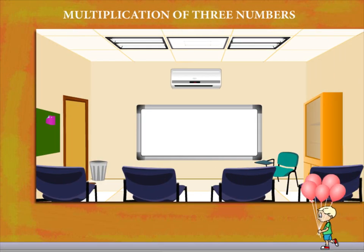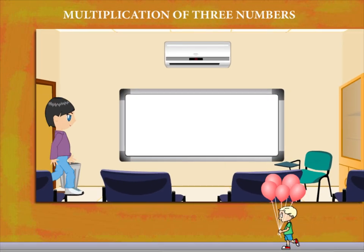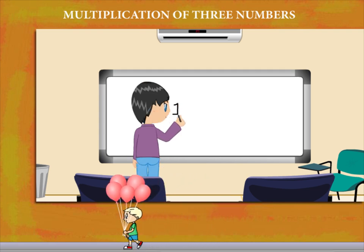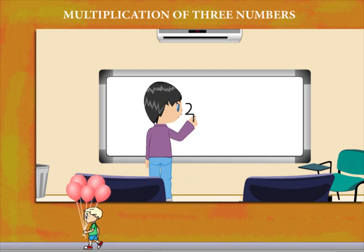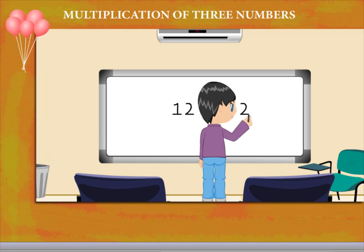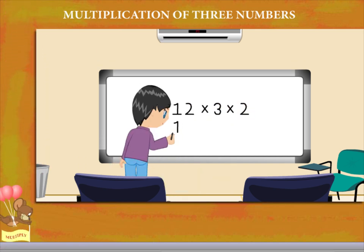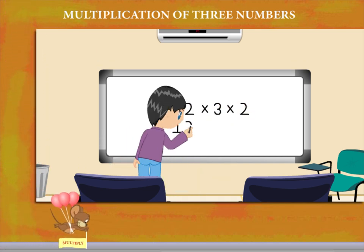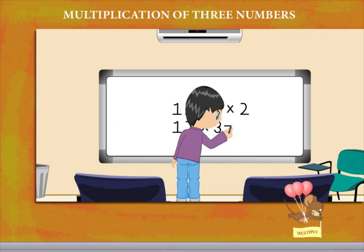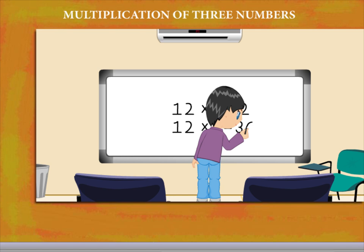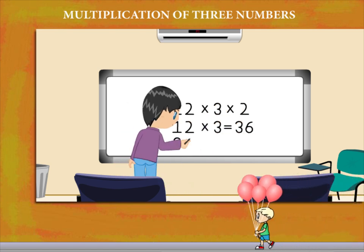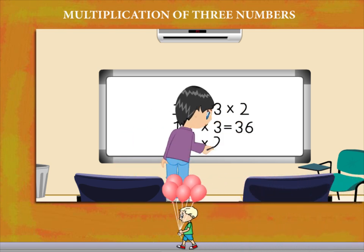Multiplication of three numbers. Jimmy is back in class to multiply 12, 3, and 2. He first writes 12 into 3 and uses his memory of tables to get 36. Now he writes 36 into 2 and gets...